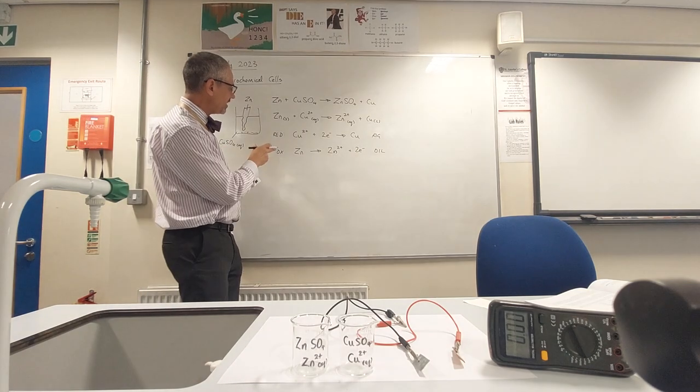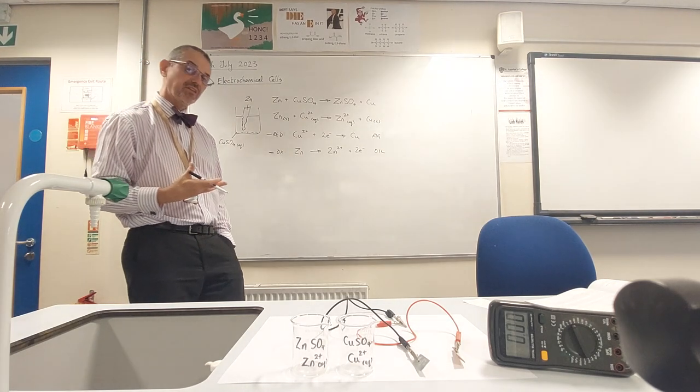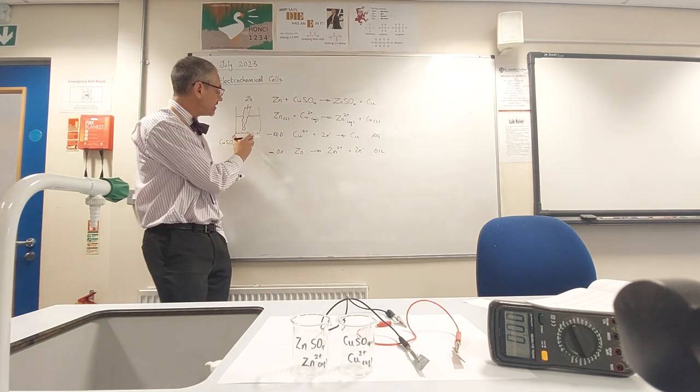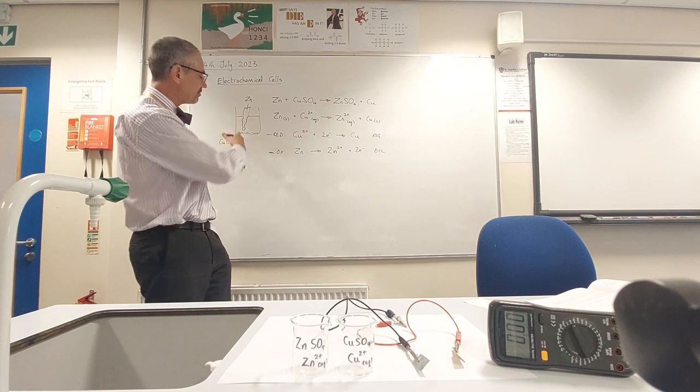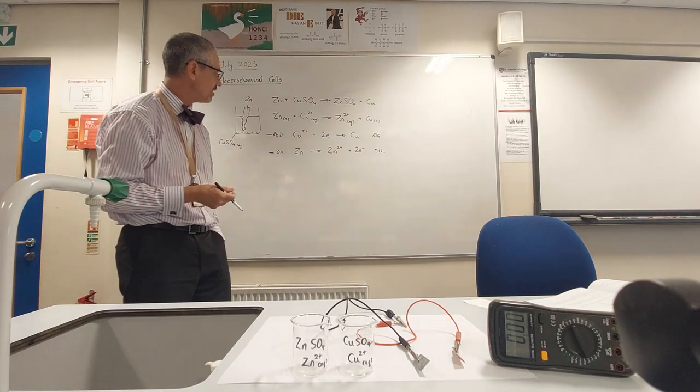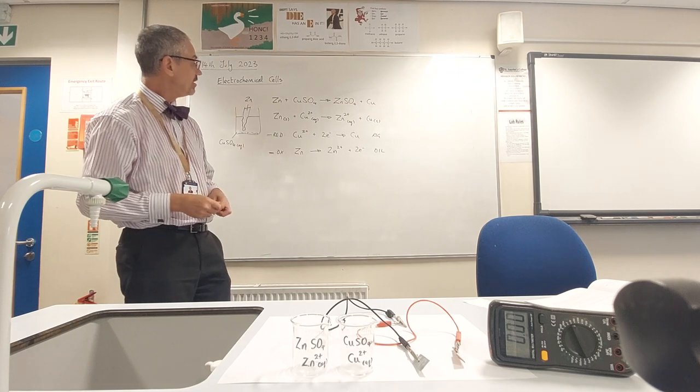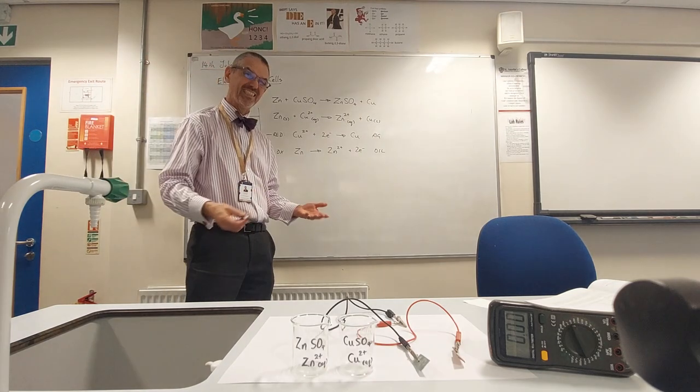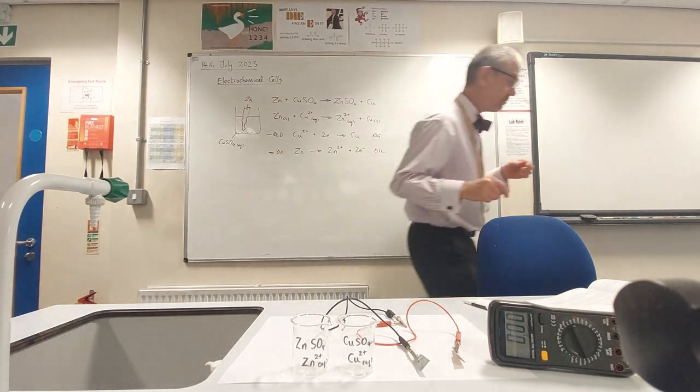So what we can see here is we've got two processes both involving electrons. In this case, the electrons are being given straight from the zinc to the copper ions. That would happen on the surface of the metal. But what if we separate those two half equations and put them into separate beakers? So that's what's going on here.